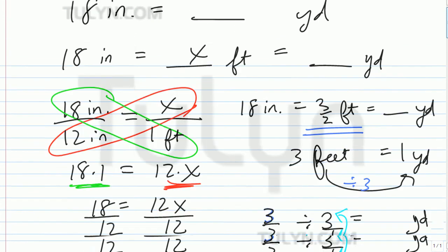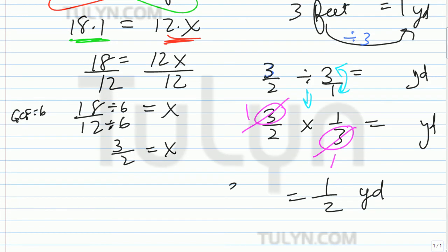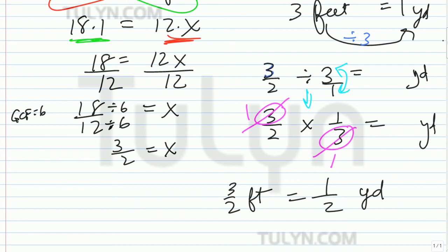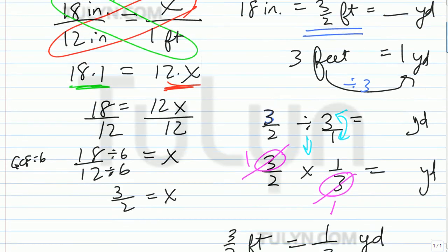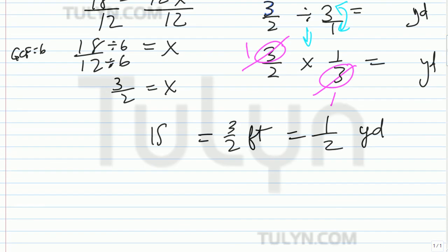So 1 half yard equals 3 halves feet, which equals 18 inches. So notice that whenever you're given something small at inches, go ahead and change it into the next converting unit, without extending all the way to yards right away.